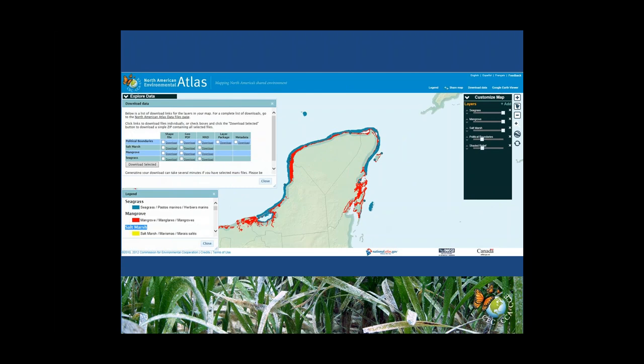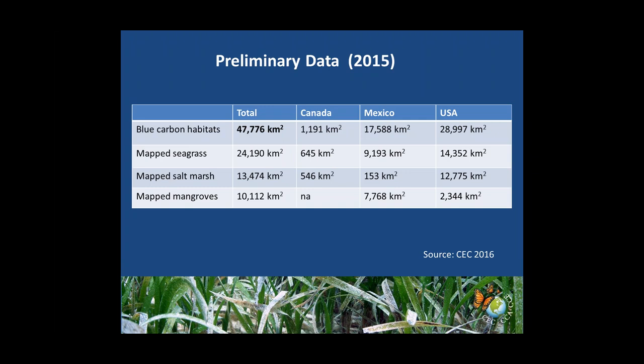So what did our preliminary data show? I want to reiterate throughout this presentation that this is preliminary data. We know there are data gaps, but we felt it was important to get it out there and have people like yourselves help us add to and verify the database — the data come with extensive metadata so you can trace the source. Looking at the preliminary data, blue carbon habitats occur around 48,000 kilometers squared of North America's coastline, with the US having the most mapped blue carbon habitat. Salt marshes and seagrasses make up the majority of that habitat.